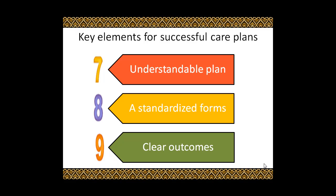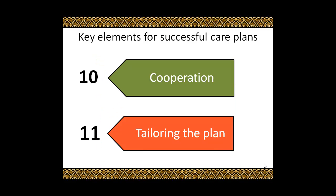Eighth, standardized forms: it is important to have a standardized form which is easy to use by both patient and pharmacist — for example, flowchart and checklist formats. This enables different pharmacists to participate in the care plan, facilitating continuity of care. Ninth, clear outcomes: the clinical and pharmacotherapeutic outcomes need to be clear with endpoints well defined. Tenth, cooperation: support and cooperation are necessary for sufficient and appropriate staffing.